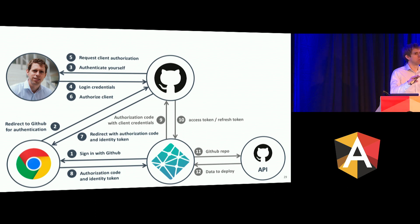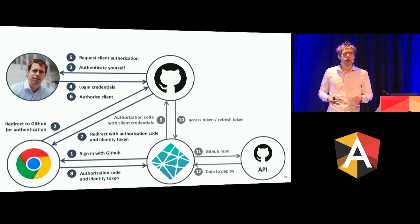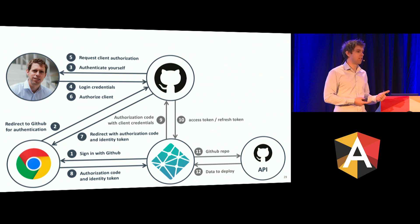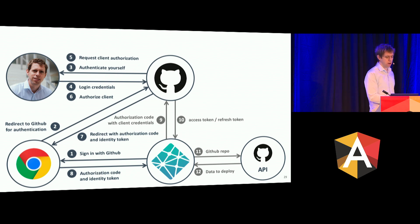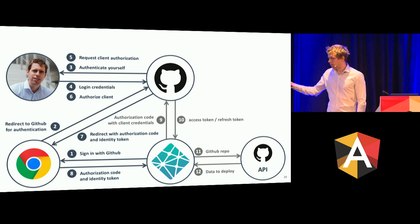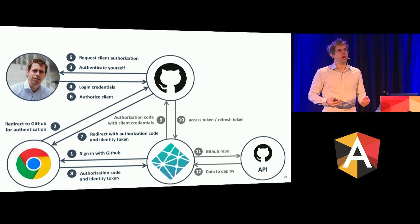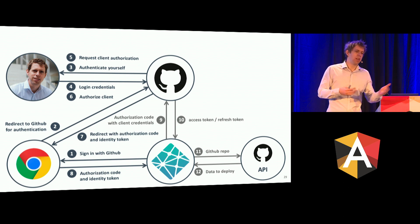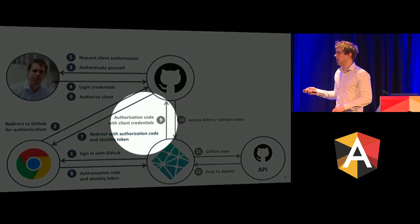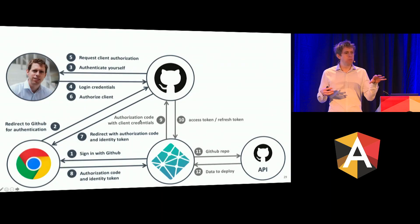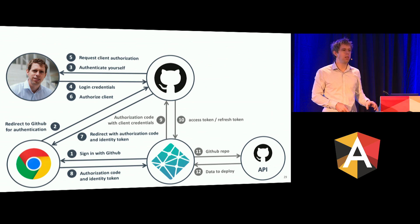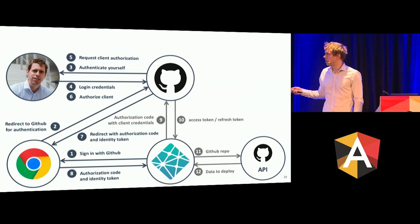That was the back-end scenario. Back-end systems — we call them secure environments because you can store secrets there. Very important: in step nine, the client — Netlify here — authenticates to GitHub. "Hey, I'm Netlify. Remember I set this up before and you gave me a secret — a client password. Here's that secret to prove it's really me." That is an important step to prevent abuse of this authorization code.